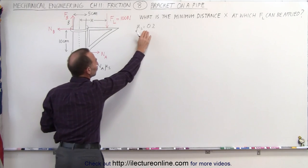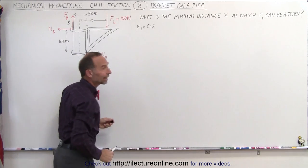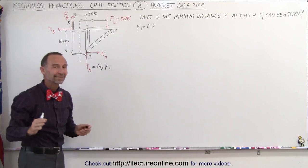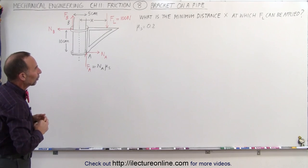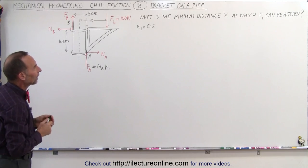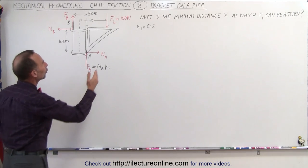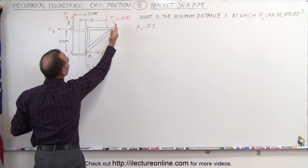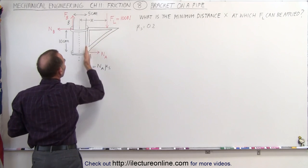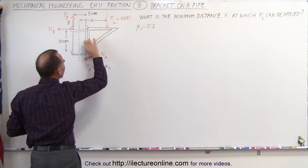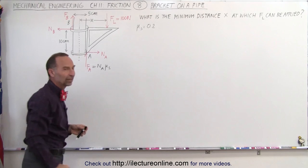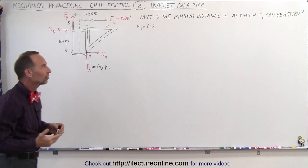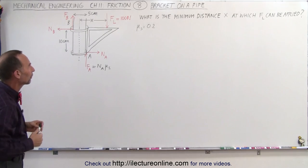In this case, we're going to assume that nothing is sliding, so we'll take the static coefficient of friction. So what we're trying to figure out is how close can we bring the load here before the whole bracket begins to slide. What is the minimum distance x at which we can still apply a load of 100 N to that bracket?